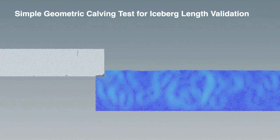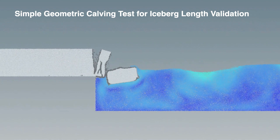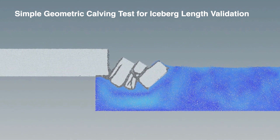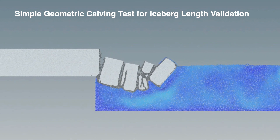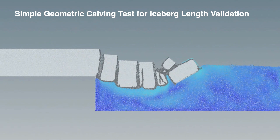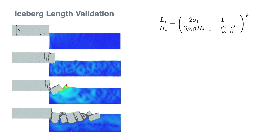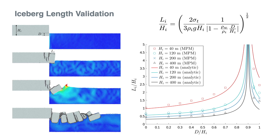Our next validation method uses an analytic bending model to validate the lengths of our simulated icebergs. Here a glacier with simple geometry enters a body of water as icebergs dynamically calve into the tank. Notice that we again color the water based on velocity, but we additionally color the hardening variable of the ice to illustrate the underlying plastic softening seen in dark grey. The fractured iceberg lengths analytically correspond to the height of the ice sheet and the submergence depth of the ice. We label the glacial height H, the submergence depth D, and the iceberg length L, and we run this simulation for a variety of D to H ratios. To validate the iceberg length, we developed a bending expression from beam theory that models the balance between the ice's weight and the water's buoyancy. In the chart at right, we show the iceberg length to height ratio as a function of the submergence depth to height ratio, and we find that our simulated iceberg lengths are in line with this theoretical bending model.